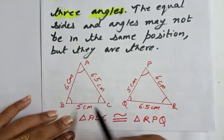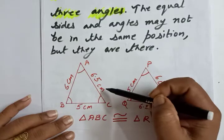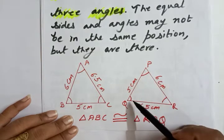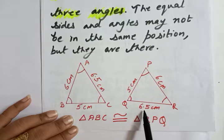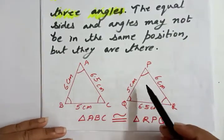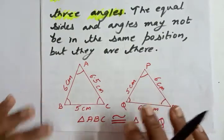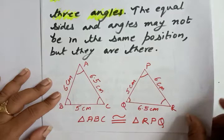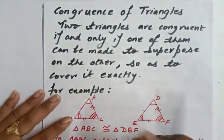In triangle ABC, one side is 6 cm, another is 6.5 cm, and the third is 5 cm. In triangle PQR, one side equals 5 cm, one equals 6 cm, and one equals 6.5 cm. They are not in the same position - AB is on the left-hand side but the 6 cm side in PQR is not necessarily on the left - their positions are different. But both triangles have exactly the same size of sides, so we can say triangle ABC is congruent to triangle PQR.